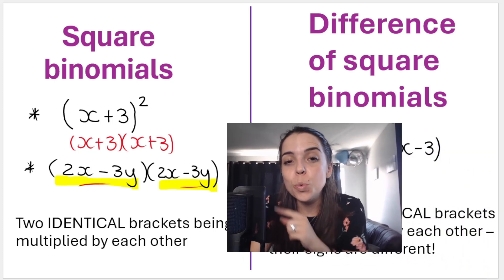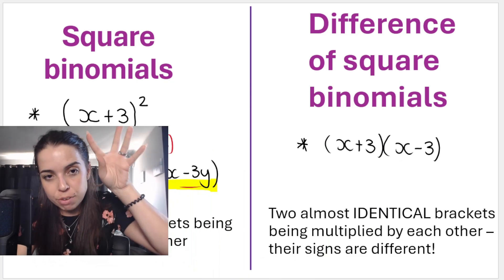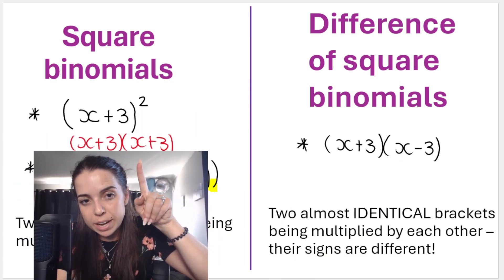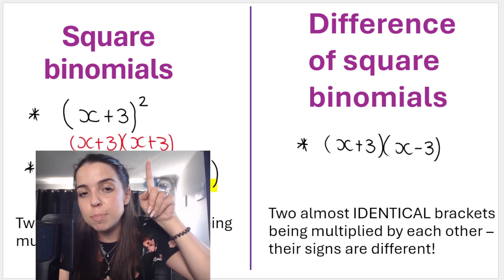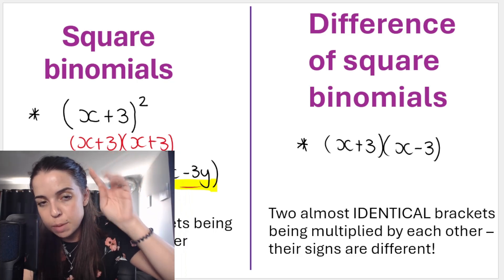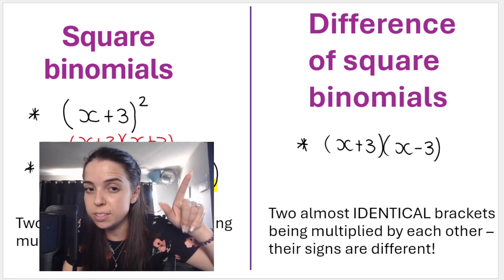In the previous video in this playlist, we went over square binomials or binomial squares, where we have a bracket to the power of two, which means that this bracket is repeated twice. It is a binomial multiplied by an identical, exactly the same binomial, same in every way, same signs and everything.